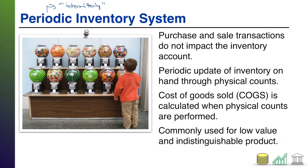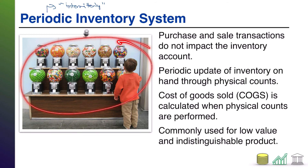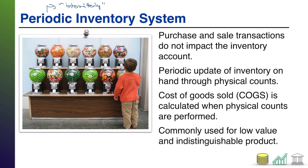This is commonly used for low value or indistinguishable products where it's not as important to know what the profit from any one product is, because it's all very uniform, or it's just not worth it to track the profit on any individual product or to know exactly how many you have on hand at any given time. Notice the picture I have over here — the candy and gumball machines. Does it matter whether there are 10 gumballs in the machine or 200 gumballs in the machine? No. The next customer that walks up will still get a gumball. You don't need to know exactly how many are in there.